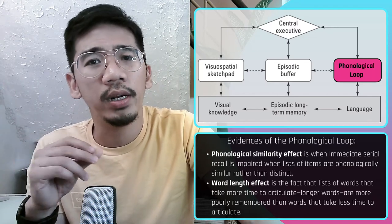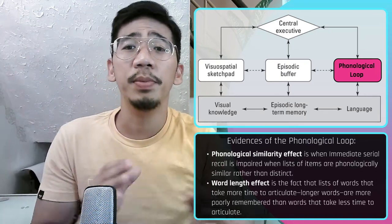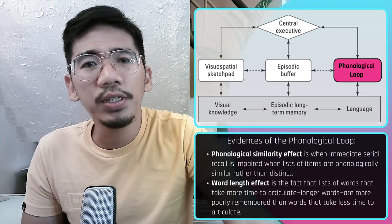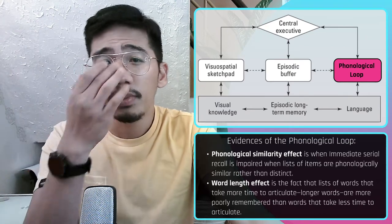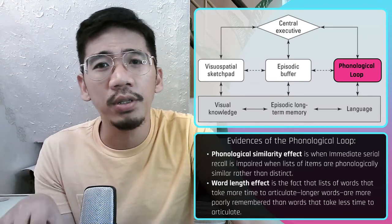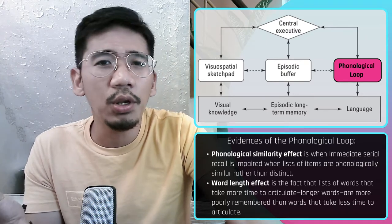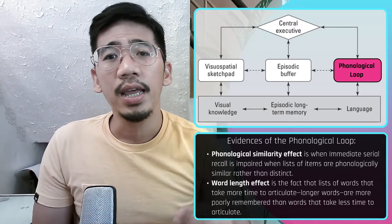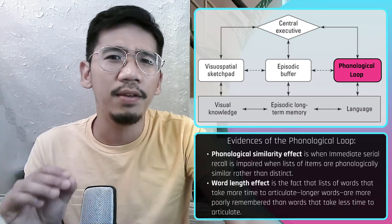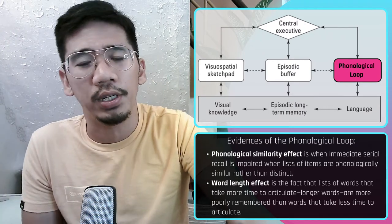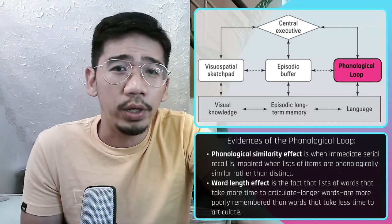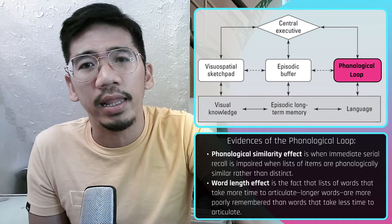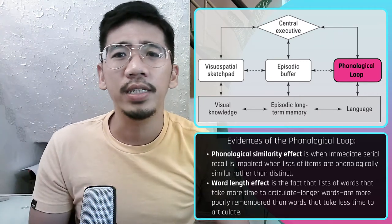If you are asked to engage in articulatory suppression — for example, counting backwards at the same time — the phonological similarity effect disappears for visually presented words. These results suggest that verbally presented words have direct access to the phonological store, but you have to say visually presented words aloud to gain access. Another evidence is the word length effect, where participants remember lists of short words much more accurately than lists of long words, even if the number of words is the same, because long words take up too much time for the phonological loop's capacity.